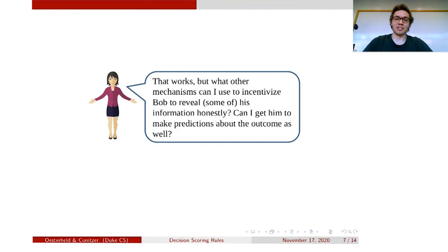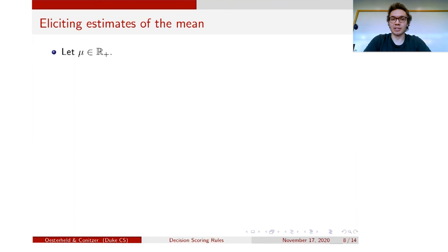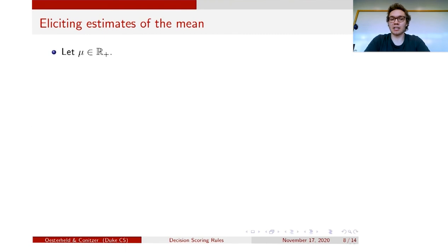We have one type of decision scoring rule — these very simple linear decision scoring rules. What other kinds of proper decision scoring rules are there? In particular, are there ones where Alice can get Bob to reveal some additional information — specifically, to make predictions about the outcome that occurs if Alice follows the recommendation? Indeed, there are such decision scoring rules. We'll give an example of a rule which is able to elicit estimates of the expected utility the principal obtains by following the recommendation. And it will turn out that that's basically all the principal can find out, and that this type of scoring rule is representative of all proper decision scoring rules in some sense.